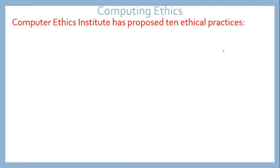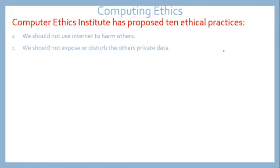Let's see what the rules of computing ethics are. The Computer Ethics Institute has proposed 10 ethical practices. First, we should not use the internet to harm others. Second, we should not expose or disturb other people's private data. Third, we should not investigate other users' files.